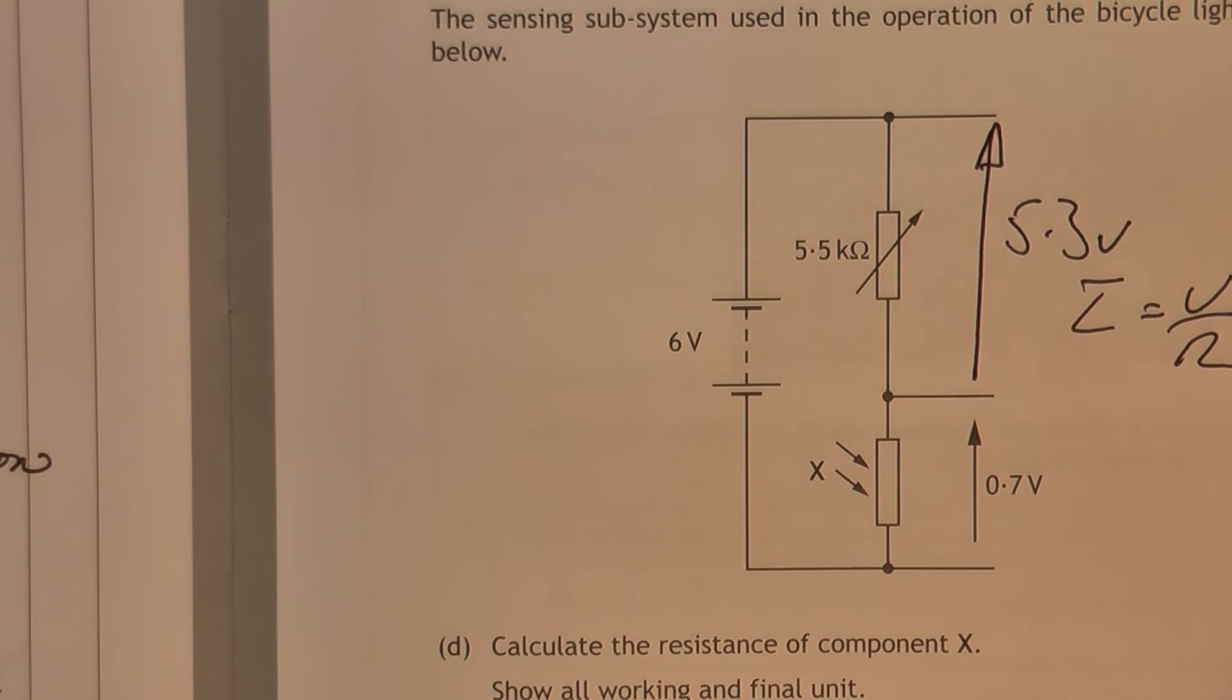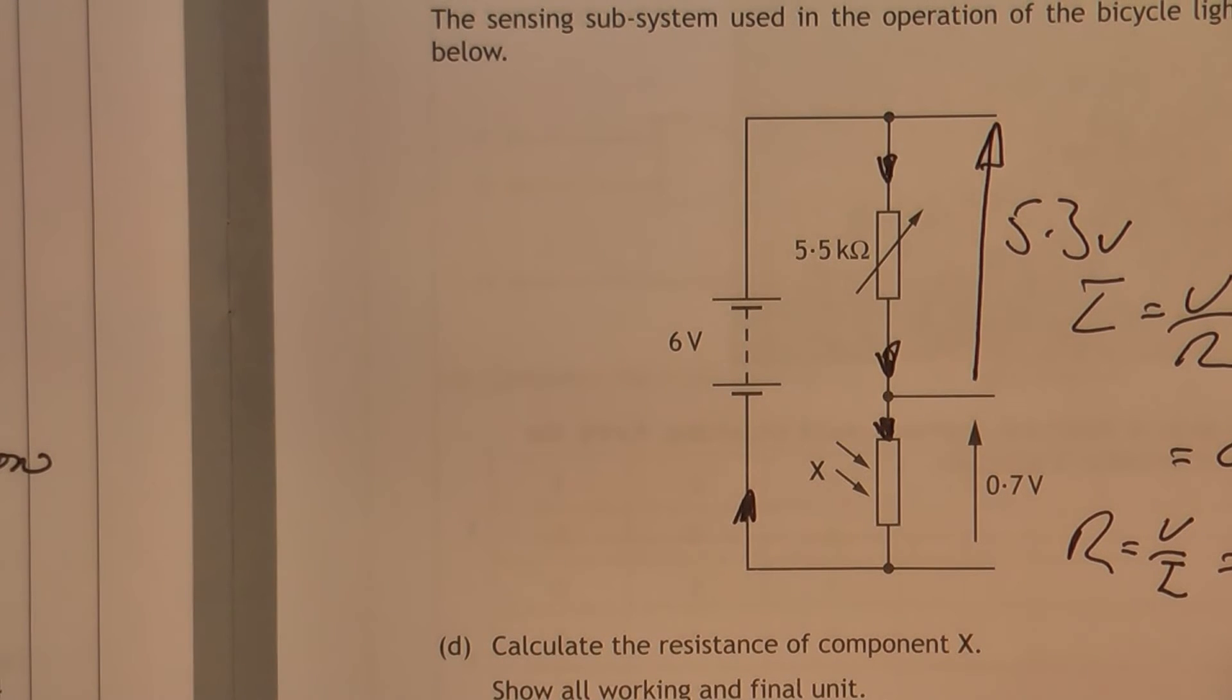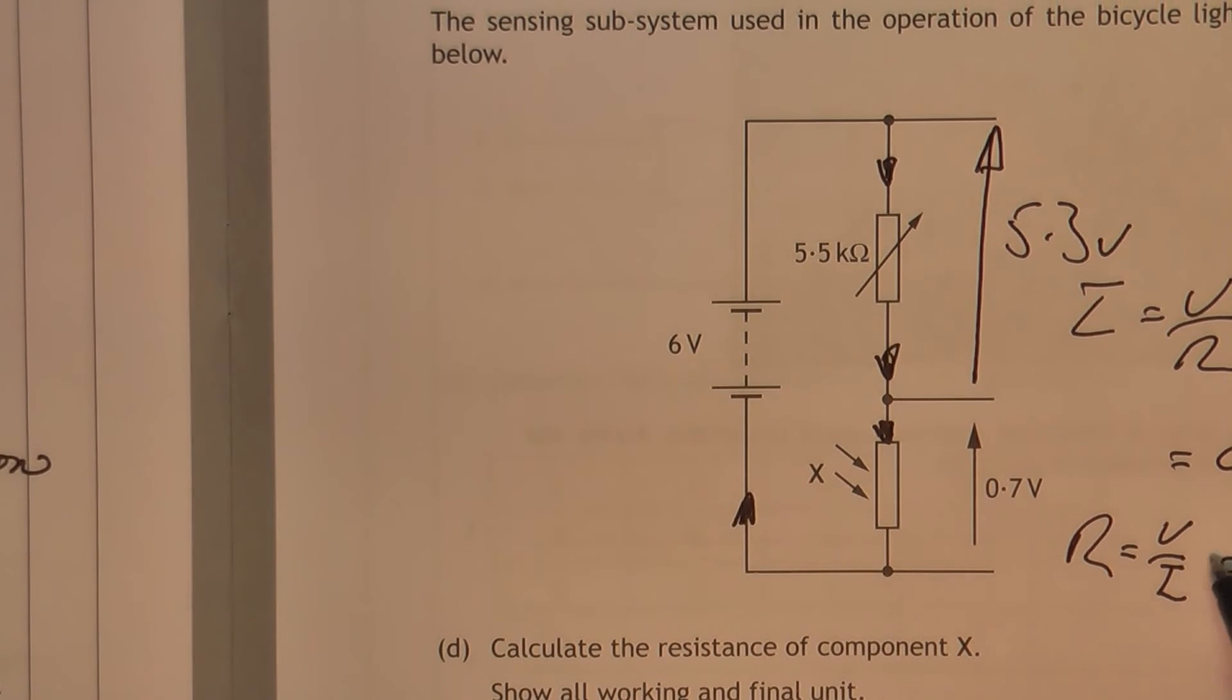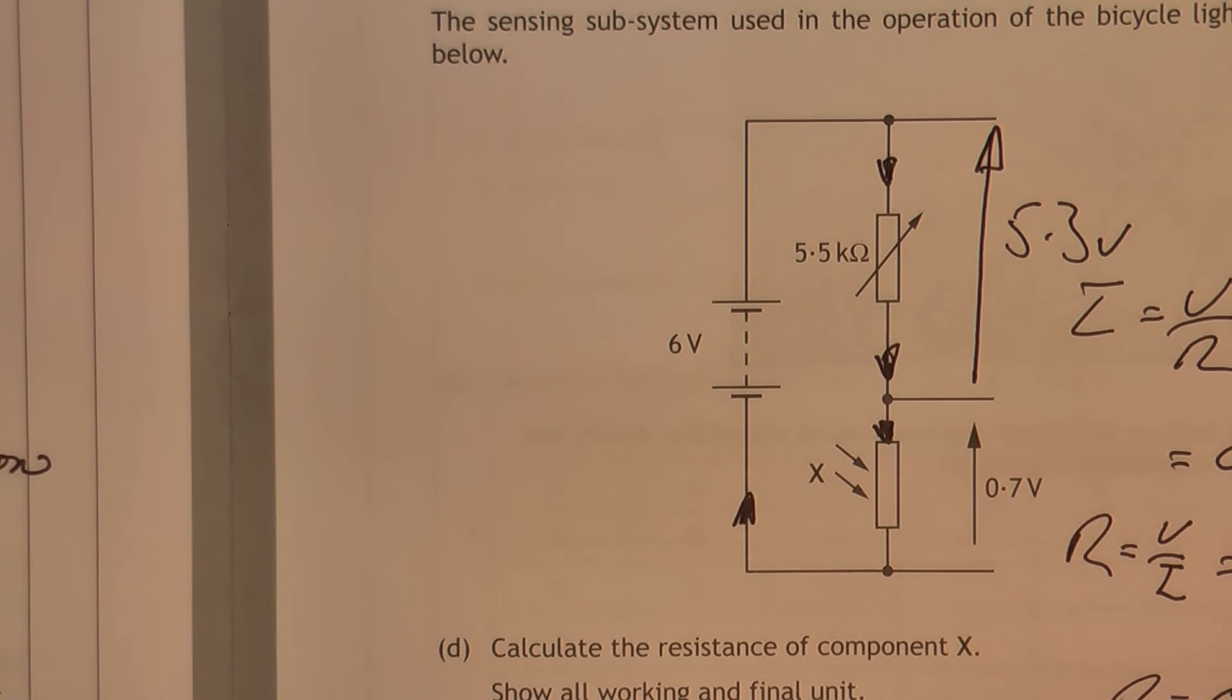Now, so R equals V upon I. So I have I is 0.964, and V is 0.7. So R equals 0.726 K.